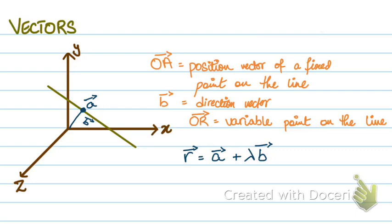This is basically similar to Y = MX + C. R is basically Y, A is C, and lambda is X, while the direction vector is basically M — it's the gradient of a line in the vector plane, in a 3D plane.